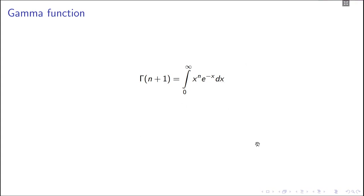So for the NET exam, you need to know these following properties. One is gamma n plus 1 equals n times gamma n. So this recursive relation is important.